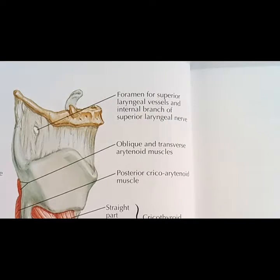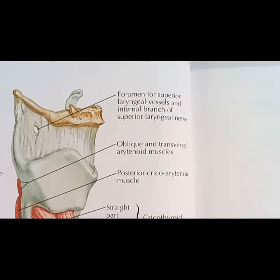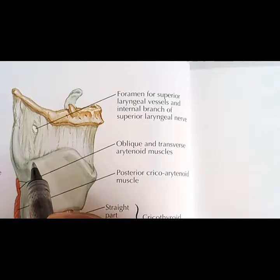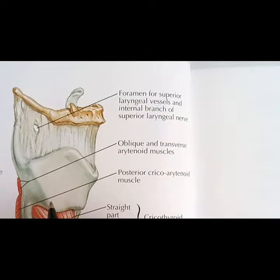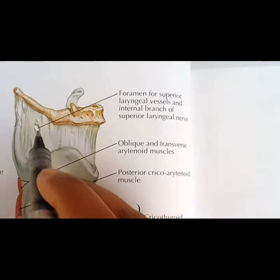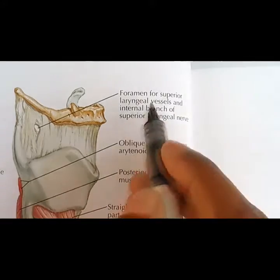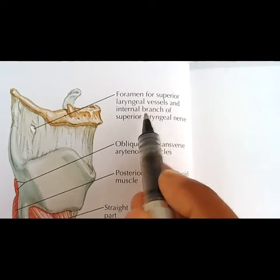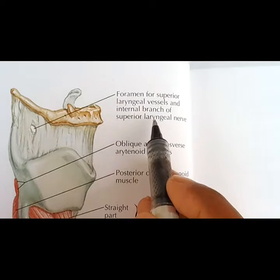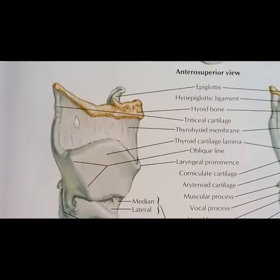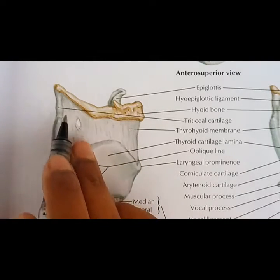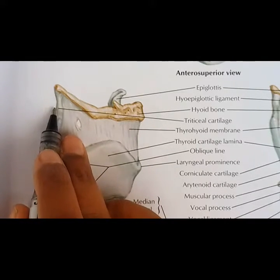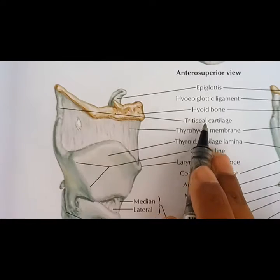This is the lateral view of the larynx showing the thyrohyoid membrane. It extends from the upper part of the thyroid cartilage to the hyoid bone. The importance of this structure is that it has a foramen on either side for the passage of the superior laryngeal vessels and the internal branch of the superior laryngeal nerve. Also, in the lateral part, this thyrohyoid membrane is thickened and has a small nodule of elastic cartilage called the triticeal cartilage.